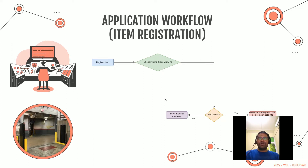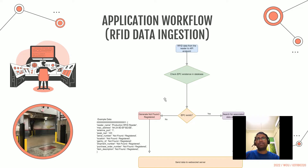On the application workflow side, the first step is item registration — the customer registers an item and the application checks if that item exists via EPC. If EPC exists, a warning error is generated and data is not inserted into the database. If EPC does not exist, data is inserted. For RFID data ingestion, data from the reader is submitted to the API endpoint crafted using Python's REST framework and we check for EPC existence. If found, associated data is returned from the database; if not found, columns are replaced with 'not found/not registered'.